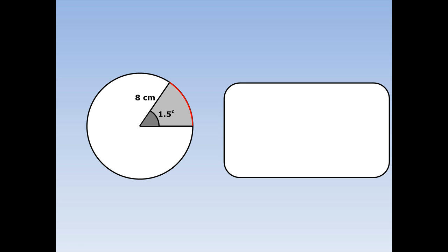Find the arc length of the sector with radius r equals 8 and the angle theta equals 1.5. Arc length equals r theta; r is 8 and theta is 1.5, so the arc length is 12 centimetres.